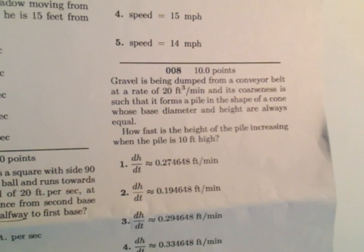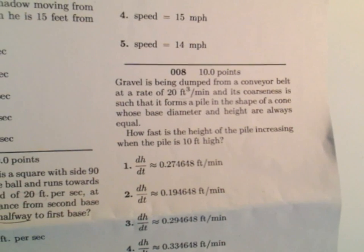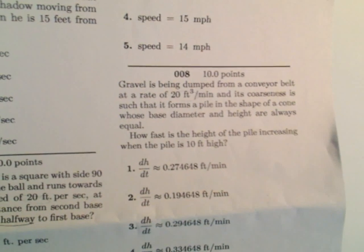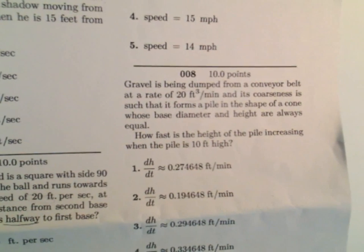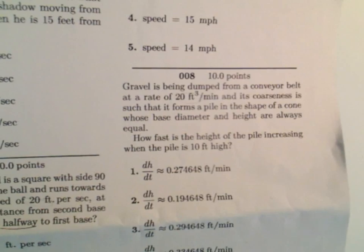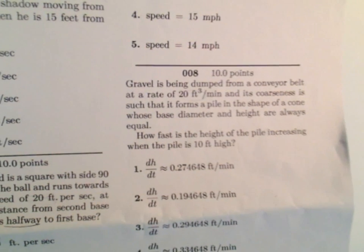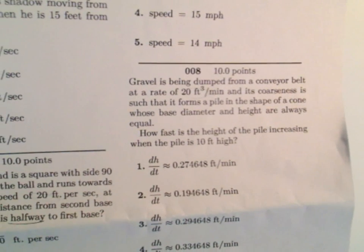So number eight, it says gravel is being dumped from a conveyor belt at a rate of 20 cubic feet per minute. Its coarseness is such that it forms a pile in the shape of a cone whose diameter and height are always equal. How fast is the height of the pile increasing when the pile is 10 feet high?